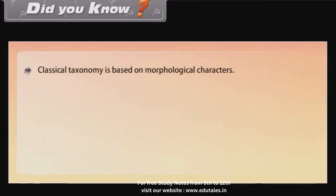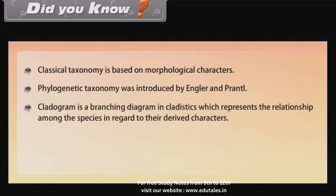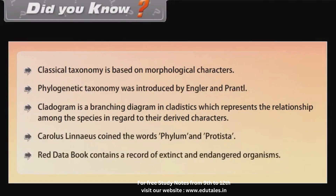Did you know? Classical taxonomy is based on morphological characters. Phylogenetic taxonomy was introduced by Engler and Prantl. A cladogram is a branching diagram in cladistics which represents the relationship among species in regard to their derived characters. Carolus Linnaeus coined the words phylum and Protista. The Red Data Book contains a record of extinct and endangered organisms.